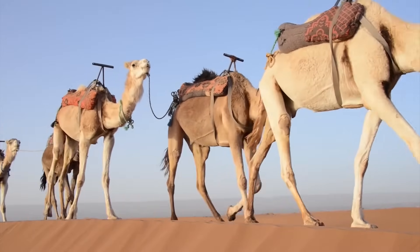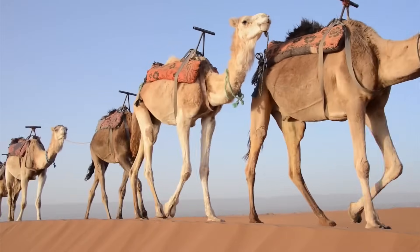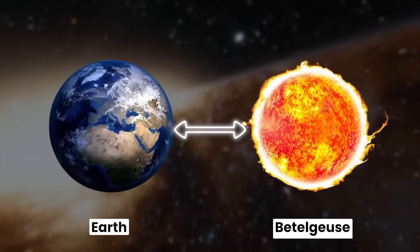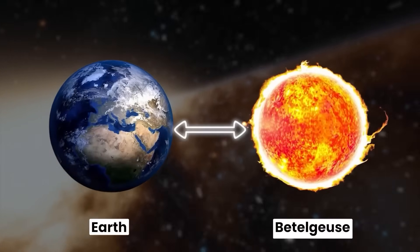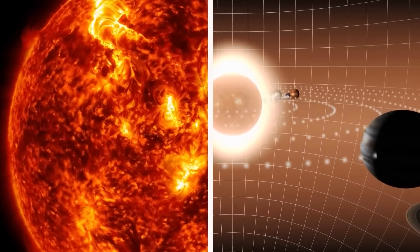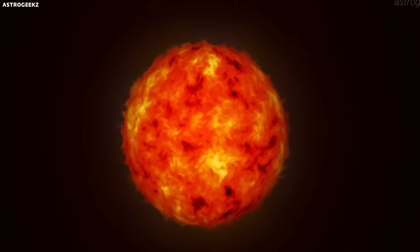For centuries, it has been a guide for travelers and a point of wonder for stargazers, with its reddish hue distinguishing it from other stars in the Orion constellation. Can you imagine a single star dwarfing our entire solar system?